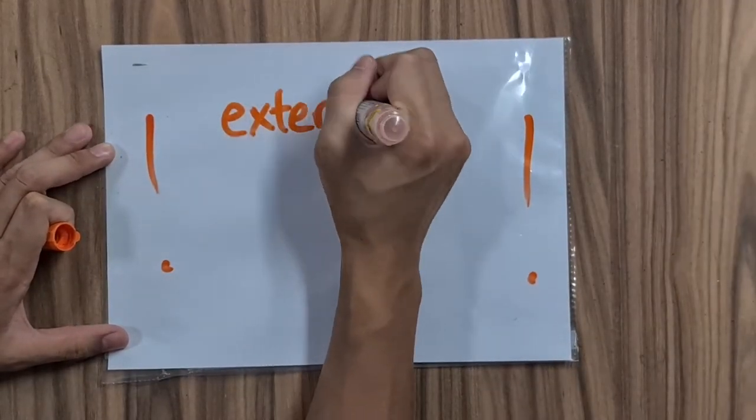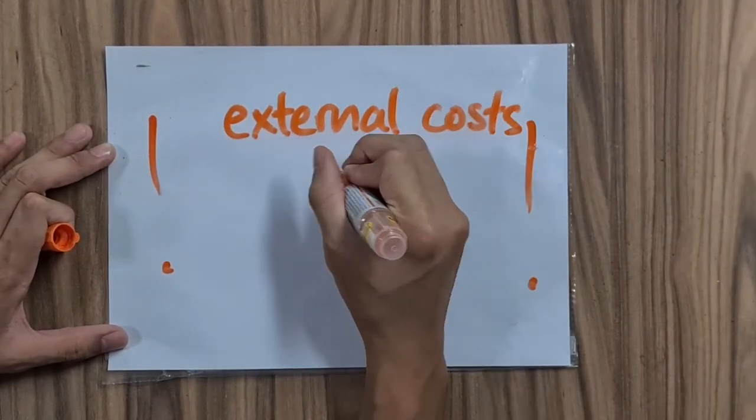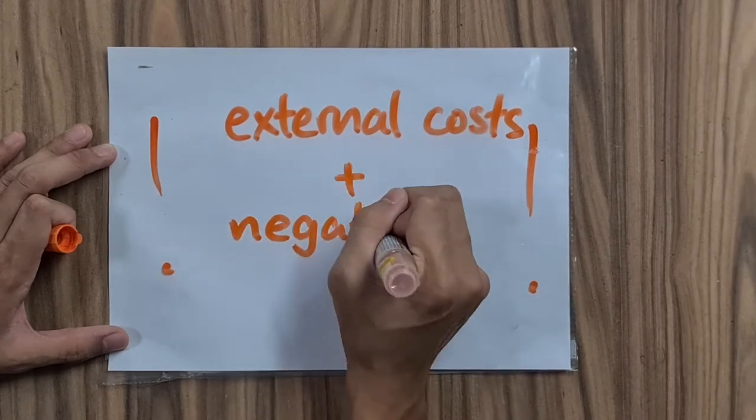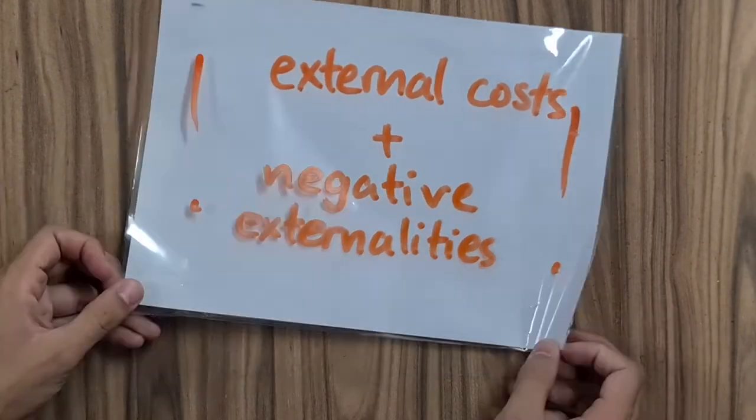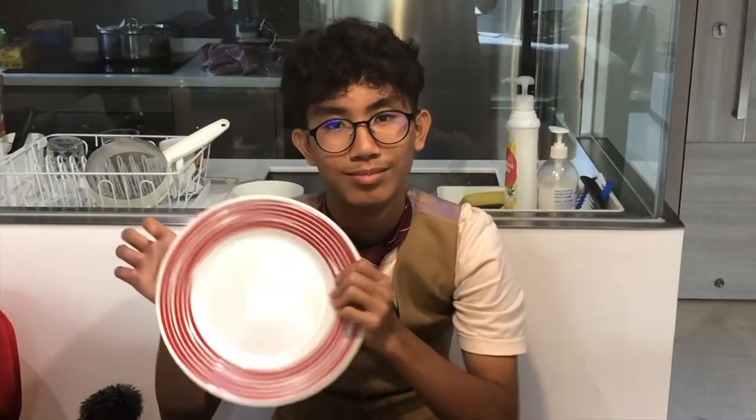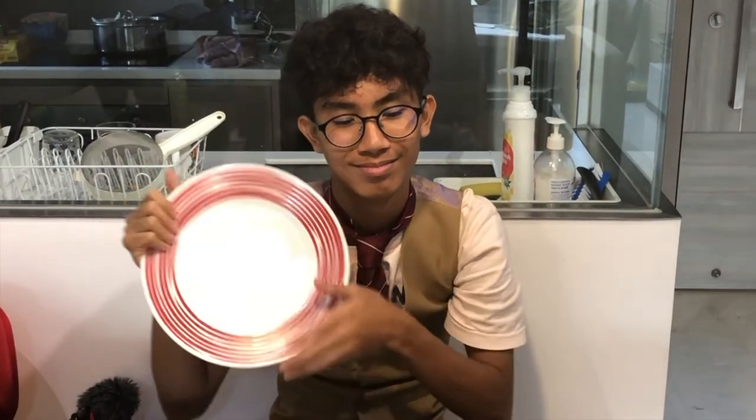Overall, our solutions work hand in hand to help reduce the external cost and negative externalities mentioned previously. These solutions will be aimed at lowering the amount of food waste and increasing profit margins for restaurants, due to the fact that there will be lower costs for food production.